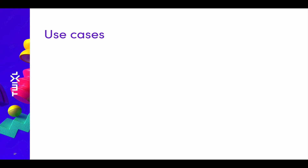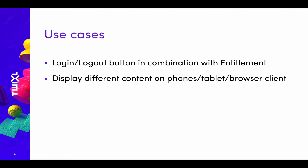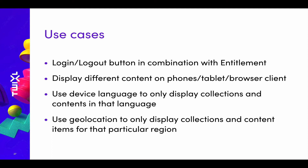It's better to explain use cases to understand what is now possible using advanced scripting. A simple one: provide a button that displays login or logout depending on the entitlement status — if a user is not logged in, it displays login; if logged in, it displays logout. Another use case is displaying different content on phones versus tablets versus the browser client. You can also use the device language in a multilingual app to only display collections and content in that particular language, or use geolocation to only display content for a particular region.